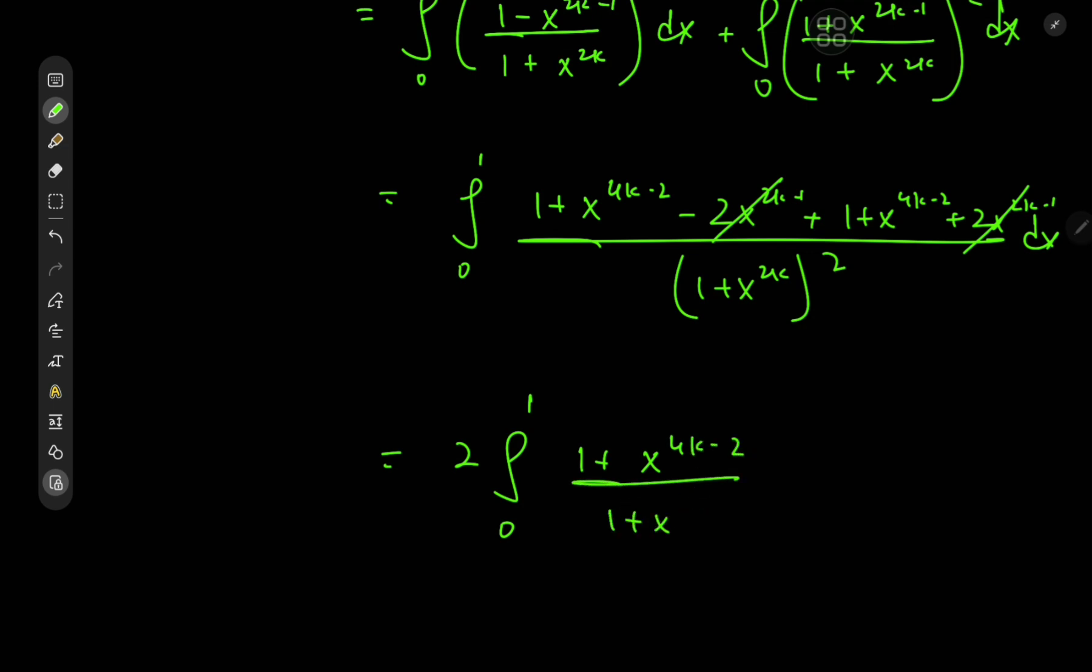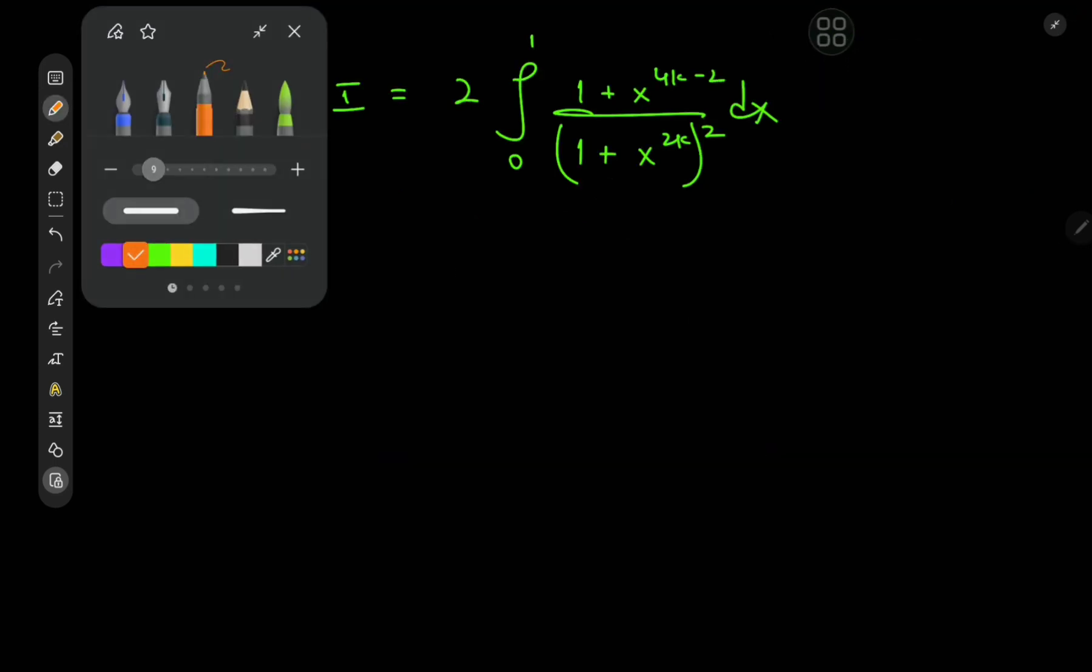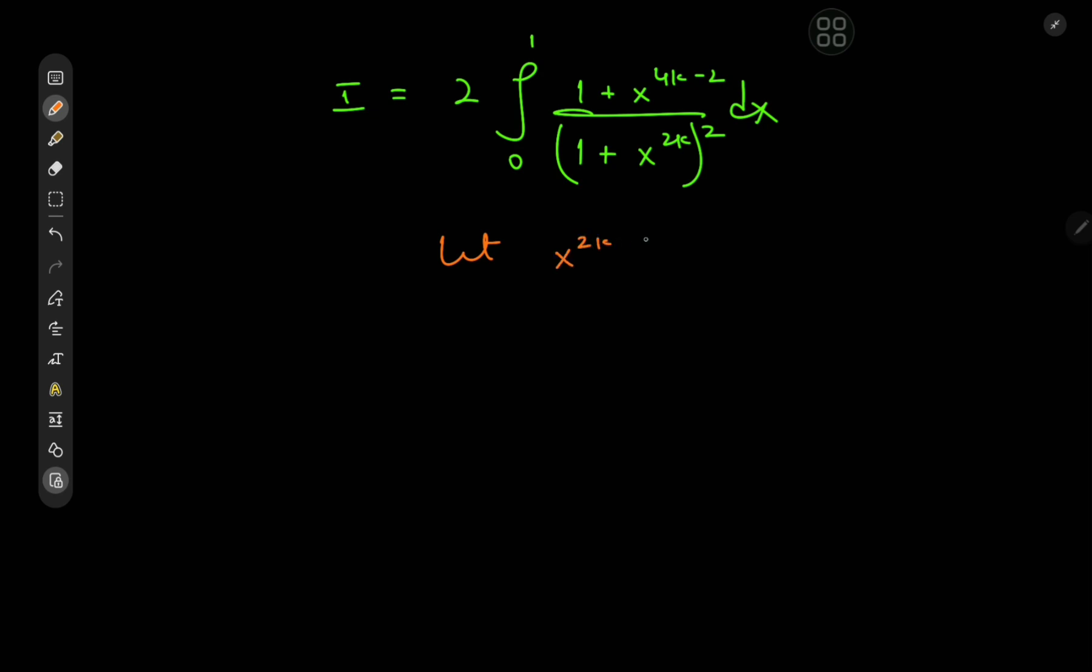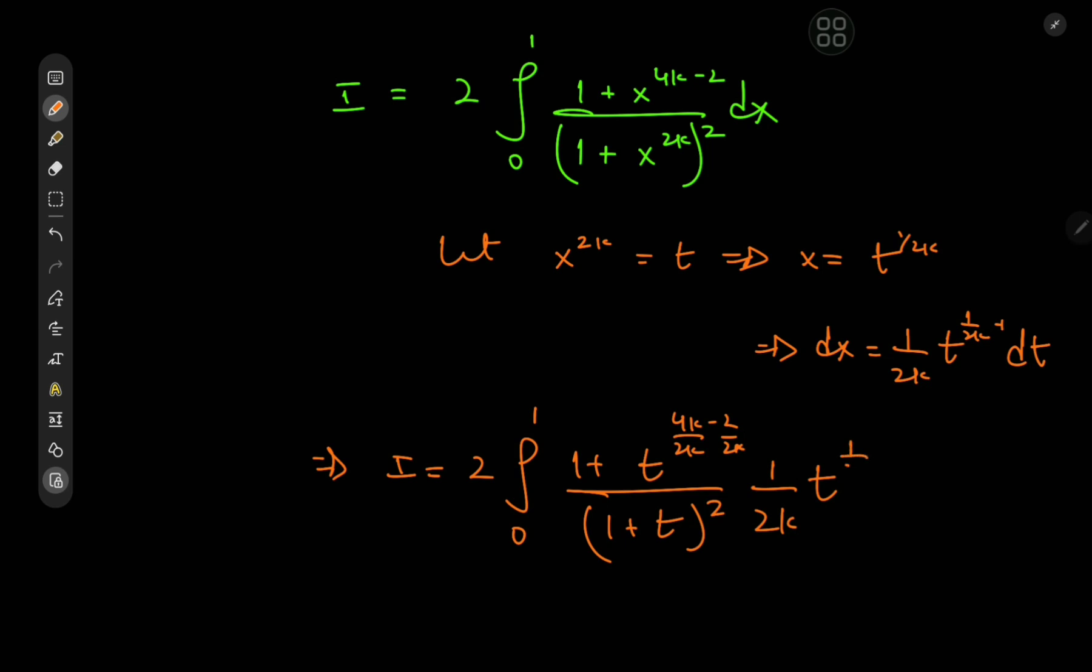And now we're left with twice the integral from 0 to 1 of (1 + x^(4k-2)) / (1 + x^(2k))^2 dx. One thing we could do now is introduce another transformation, this time letting x^(2k) = t, which means that x here is just t^(1/(2k)), which implies that dx is (1/(2k))t^(1/(2k) - 1) dt and the limits are clearly not bothered. So we have I now equal to 2 times the integral from 0 to 1 of (1 + t^(4k-2)/(2k)) / (1 + t)^2 times (1/(2k))t^(1/(2k) - 1) dt. There's some cancellation happening straight away.